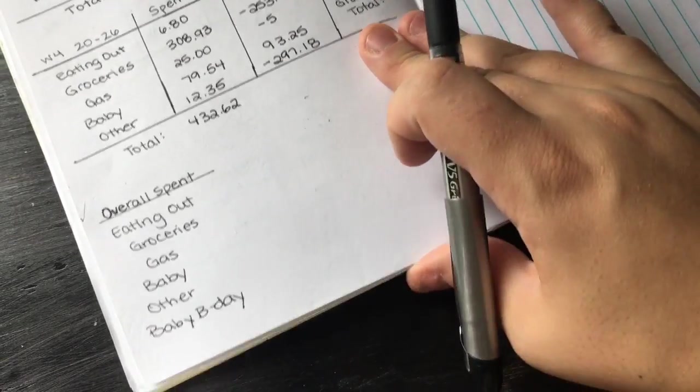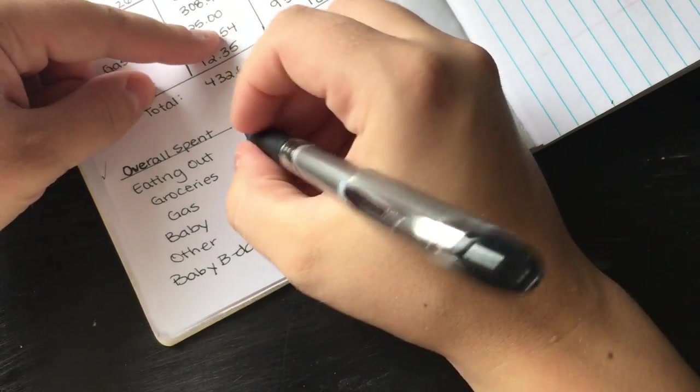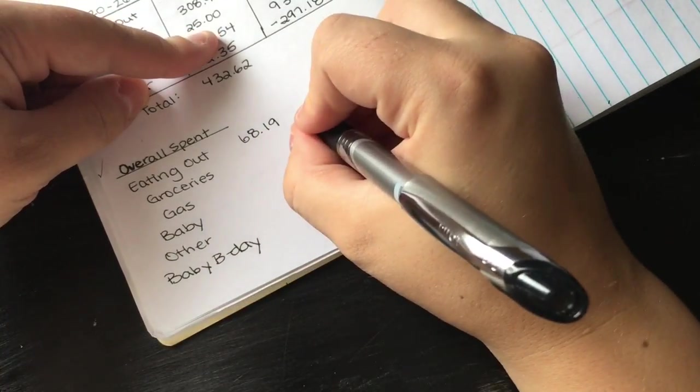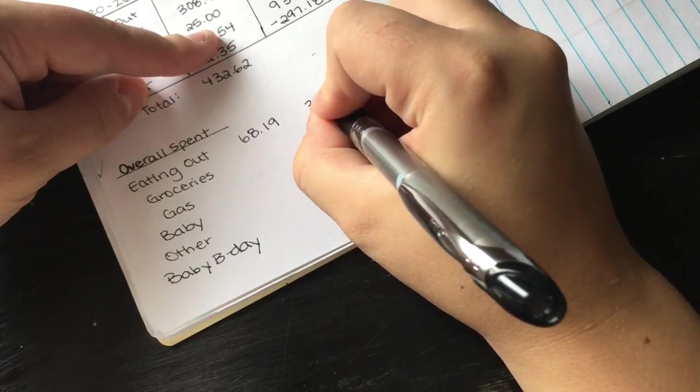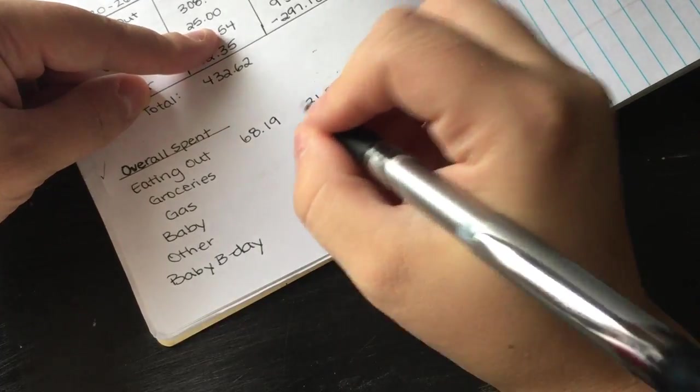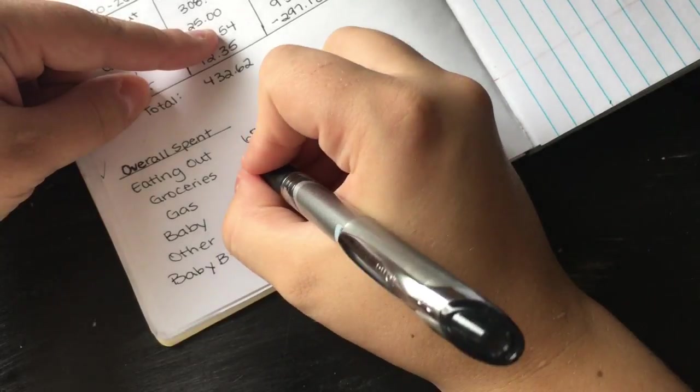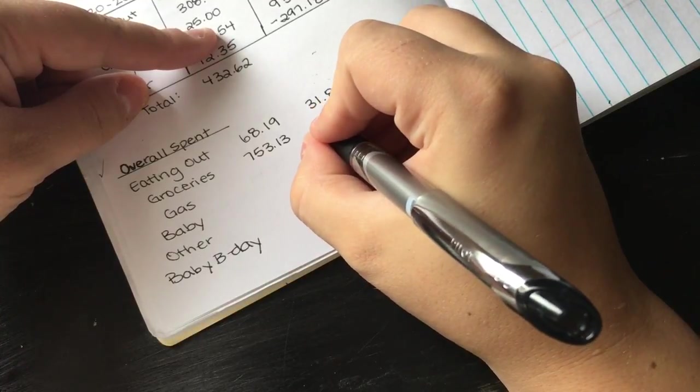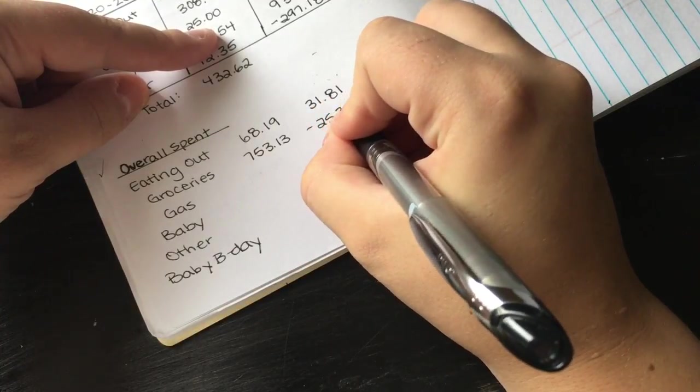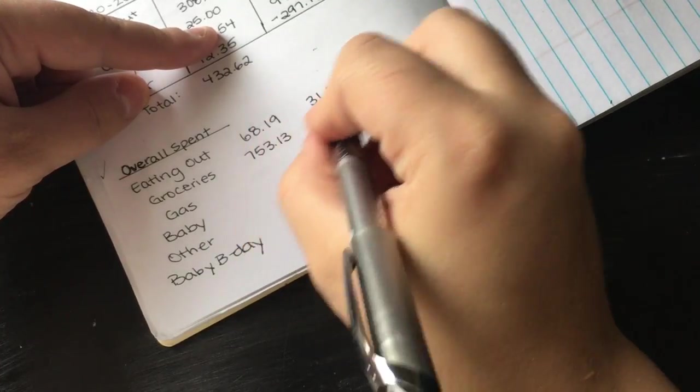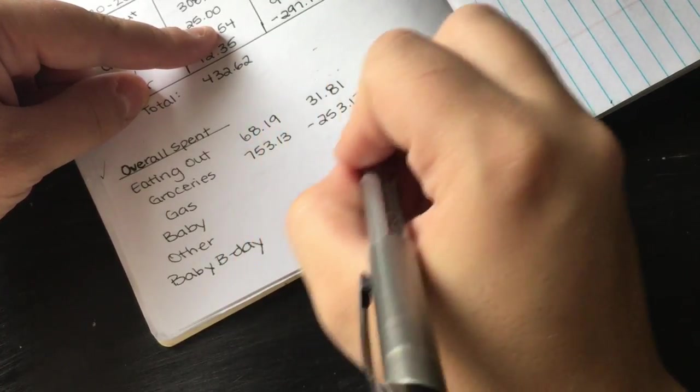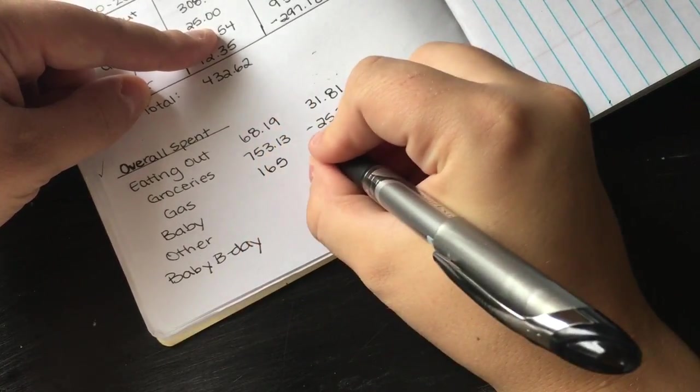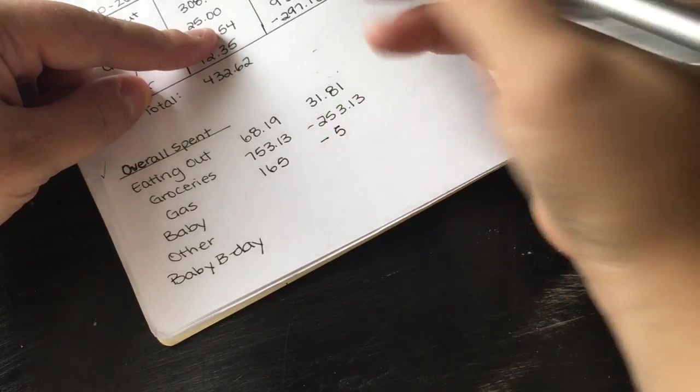So overall we spent $68.19 on eating out, which means we are under budget by $31.81, which is awesome. Groceries we spent $753.13, which means we are over $253.13. We had a $100 budget for eating out, $500 budget for groceries. Gas we spent $165, so we were over by $5.